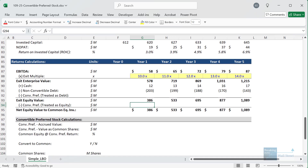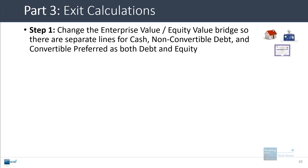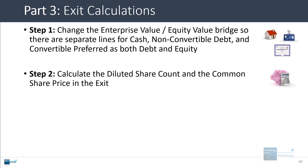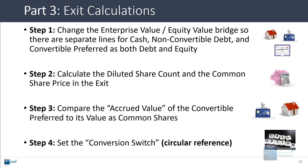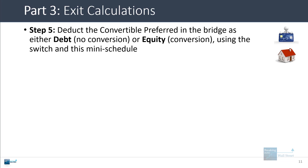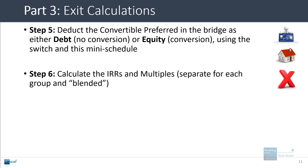Where it gets harder is with the returns and exit calculations at the end. We need to change the bridge calculations and separate out different line items. We need to calculate the diluted share count and the common share price in the exit. Then we compare the accrued value of the convertible preferred to its value when converted into common shares, decide whether investors convert or stay in preferred — which creates a circular reference — then deduct the convertible preferred in the bridge as either debt or equity depending on the conversion decision. Finally we calculate IRRs and multiples for common equity, convertible preferred investors, or a blended return.